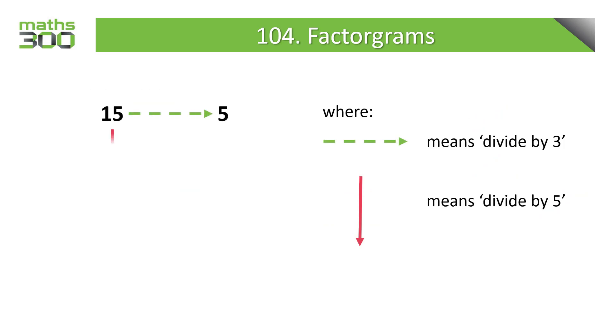Here we see that 15 divides by 3 and also divides by 5. We use the dotted green arrow to represent a division by 3 and a solid red arrow to represent division by 5. Clearly 15 divided by 3 is 5 and 15 divided by 5 is 3. Similarly 5 divided by 5 is 1 and 3 divided by 3 is 1.